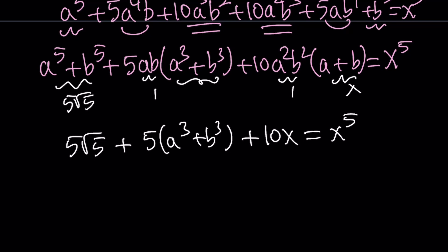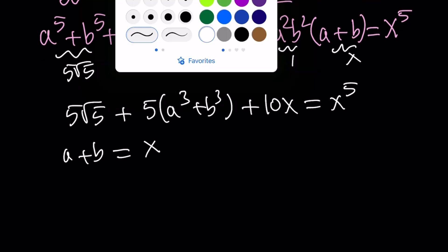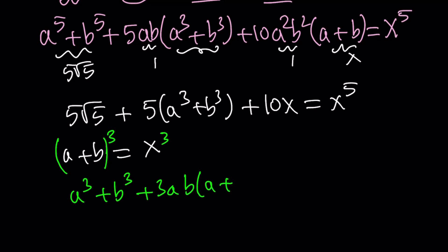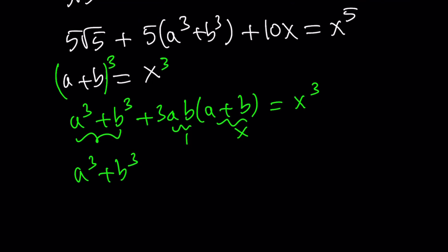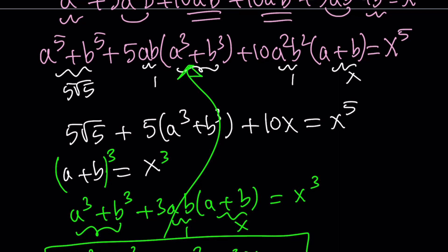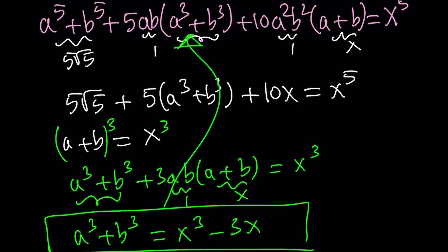At this point, I don't know a³ + b³ in terms of x, but I can obtain it from a + b = x. I'm going to cube both sides. From the famous identity, (a + b)³ = a³ + b³ + 3ab(a + b). So a³ + b³ = x³ − 3(1)(x) = x³ − 3x. That's something we can definitely use here, and when we plug it in we'll get a nice quintic equation.